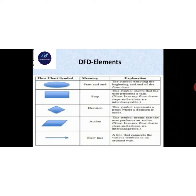The diamond symbol represents a decision — the point where a decision is made. If-conditions, for-conditions, and while-conditions are given in the box. Next, the slanted square is an action symbol meaning the user performs an action; in many flowcharts steps and actions are interchangeable. The arrow mark is a flow line — a line that connects the various symbols in an ordered way.